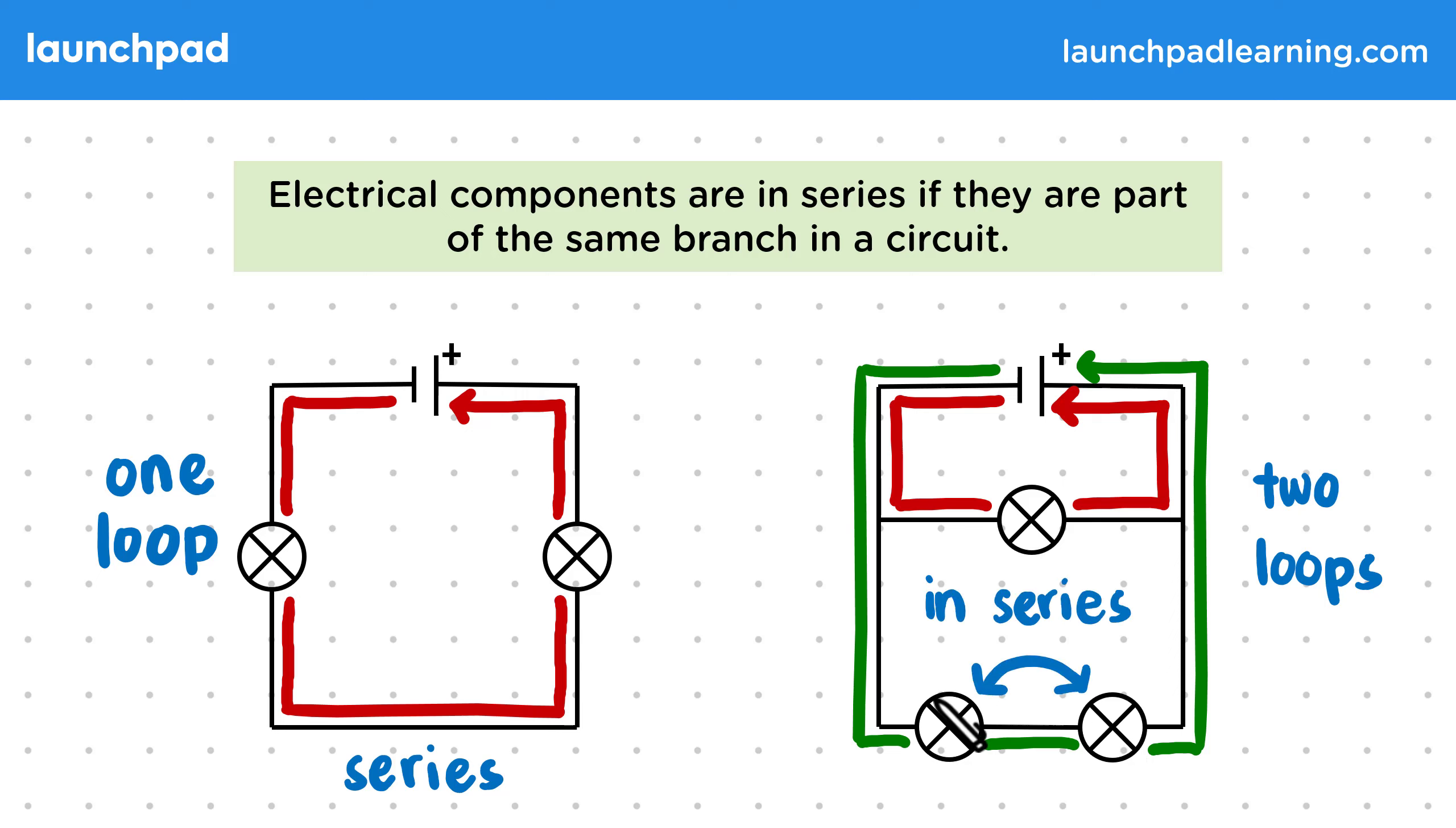But they won't be in series with this third lamp as this is on a separate branch of the circuit and no path includes all three lamps together. So why is it important to understand when components are in series?